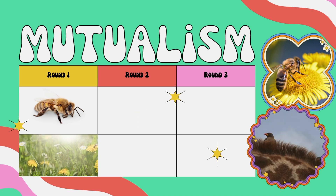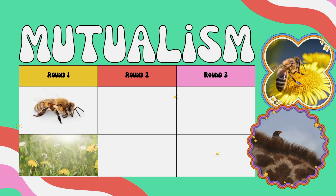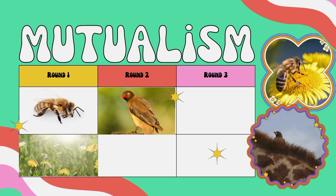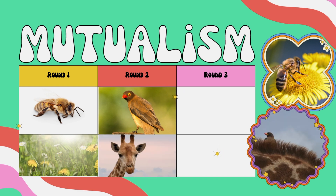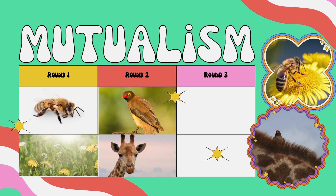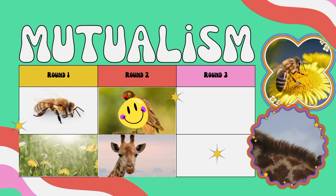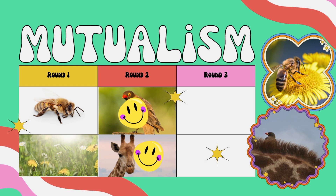Coming up in round two, we have the oxbird and the giraffe. The oxbird removes pests and parasites from the giraffe. So the oxbirds get food because they like eating pests and parasites, and the giraffe gets rid of annoying pests and parasites. The oxbird benefits and the giraffe benefits. That's mutualism.